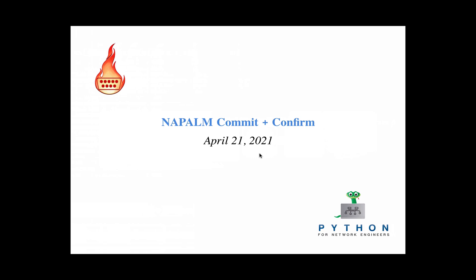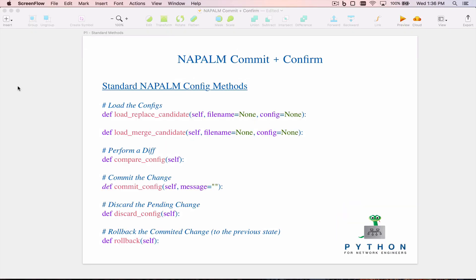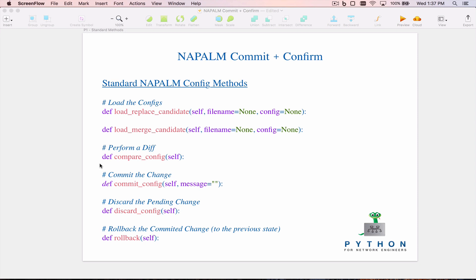Just a quick review of some of NAPALM's standard configuration methods. We have methods for loading configuration: load_replace_candidate, which lets you load a full configuration as a candidate configuration, and load_merge_candidate, which lets you load a partial configuration. In both cases, the files are just staged as a candidate configuration. You can also perform a diff, which compares your staged candidate configuration to the current running configuration and tells you the differences.